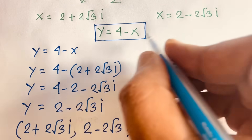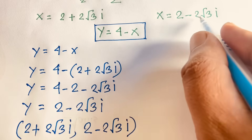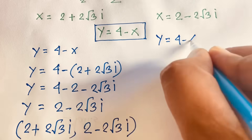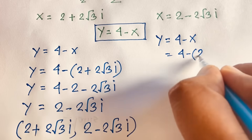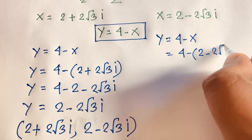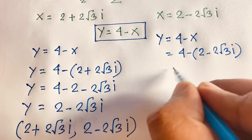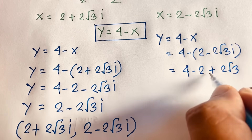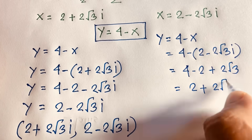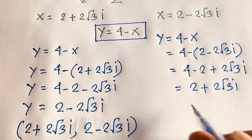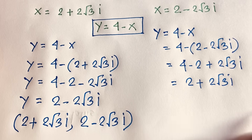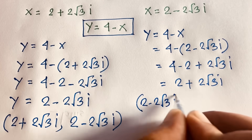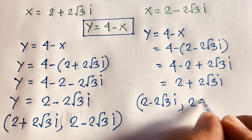For the second solution, x equals 2 minus 2√3i. Using y equals 4 minus x: y equals 4 minus (2 minus 2√3i), which gives 4 minus 2 plus 2√3i. So y equals 2 plus 2√3i. When x equals 2 minus 2√3i, y equals 2 plus 2√3i.